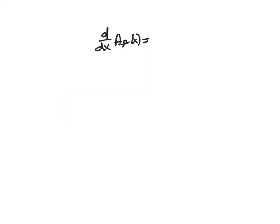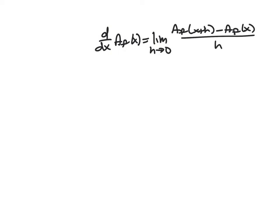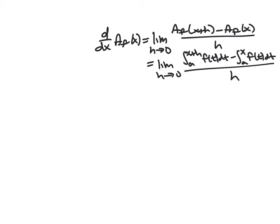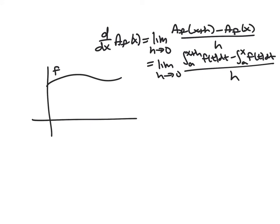Let's see why this is true. We're taking a derivative without a general formula for f, so we go back to the limit definition: the derivative is [A_f(x+h) − A_f(x)] / h as h → 0. Writing out the area function, this is [the integral from a to x+h of f(t) dt minus the integral from a to x of f(t) dt], all over h. Now, drawing a picture is very important here: the red area goes from a to x, and adding h gives us the red plus a blue sliver out to x+h.